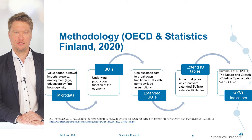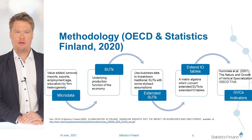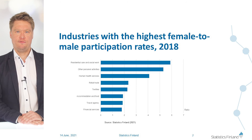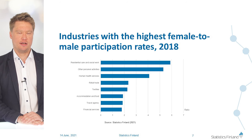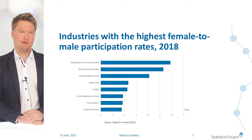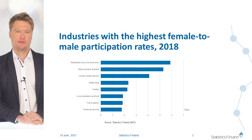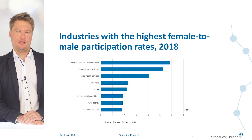With this background on the methodology and reasoning, we can have a look at a few key indicators. The first figure shows the basic reason why we can expect that trade will have a gender-differentiated effect. We have ordered the industries with the highest female-to-male participation rates. The figure shows that the highest female-to-male ratios are found in residential and social work industries, personal activities, and human health services — and these are not the highest paid industries in the economy, nor are they particularly open to trade.